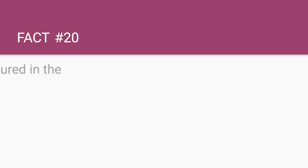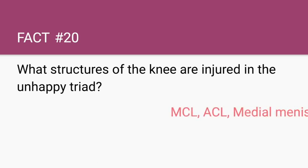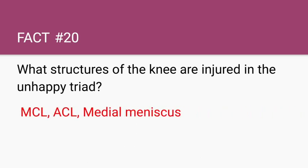What structures of the knee are injured in the unhappy triad? The medial collateral ligament, the anterior cruciate ligament, and the medial meniscus.